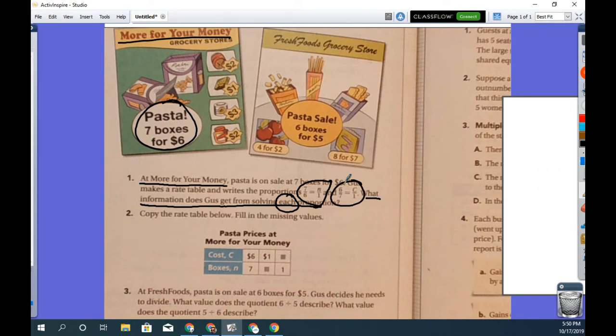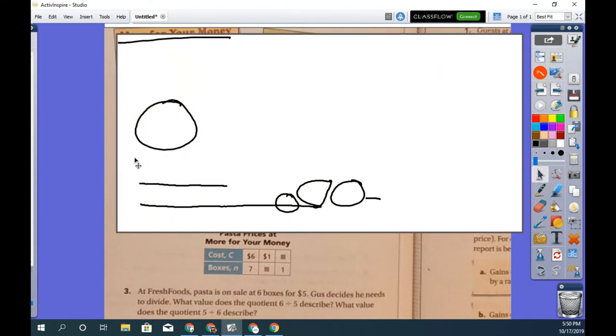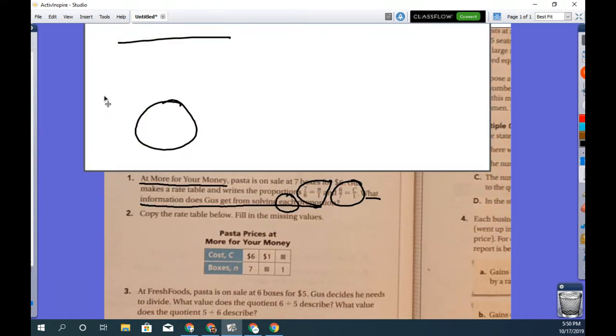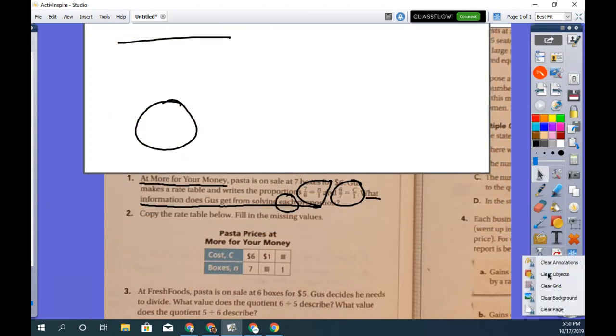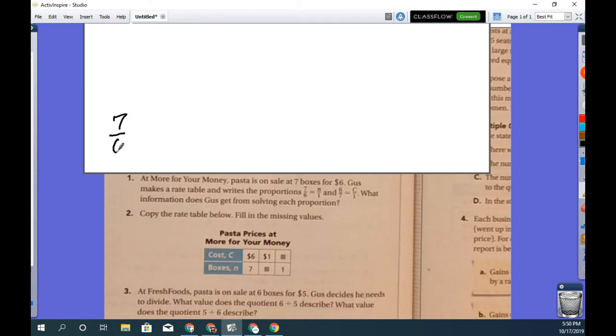So let's go ahead and start with the first one. I'm going to bring in this little sketching box over here. And let's write out that first proportion. Seven over six equals n over one.